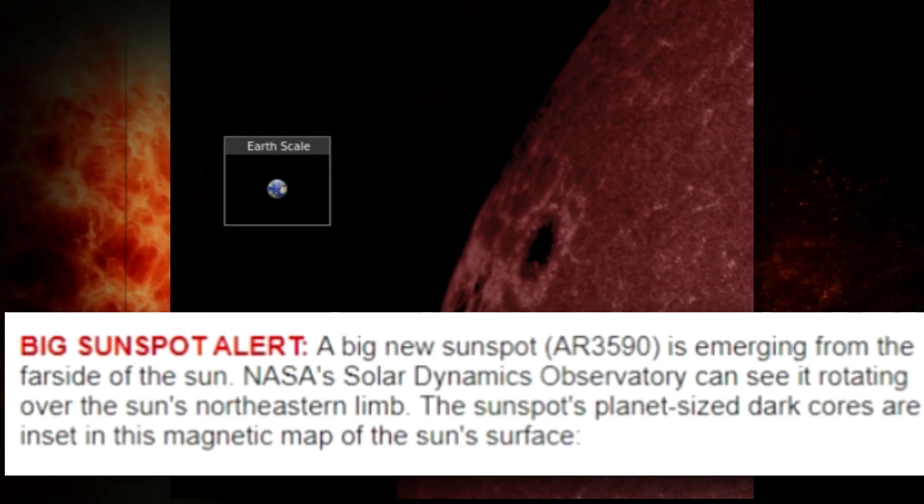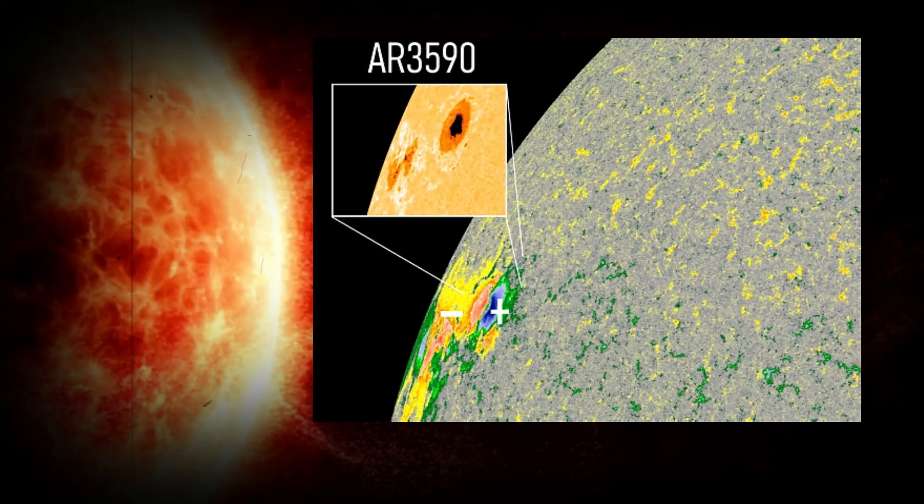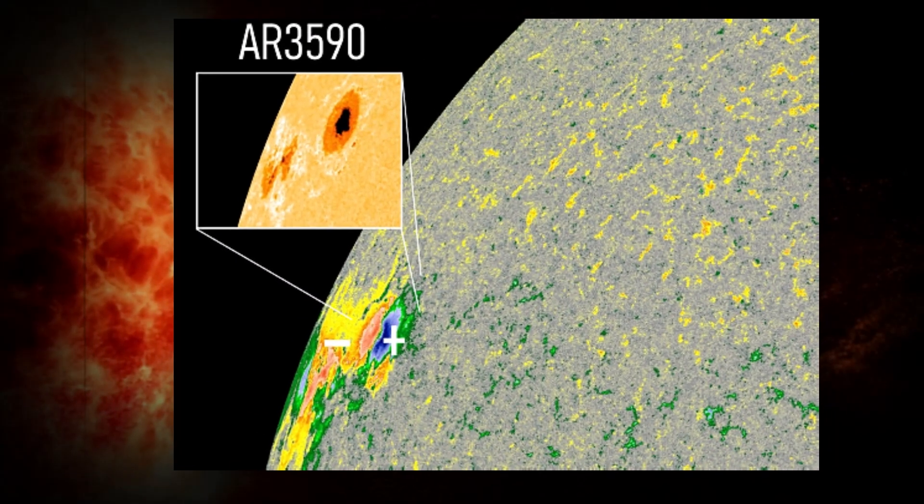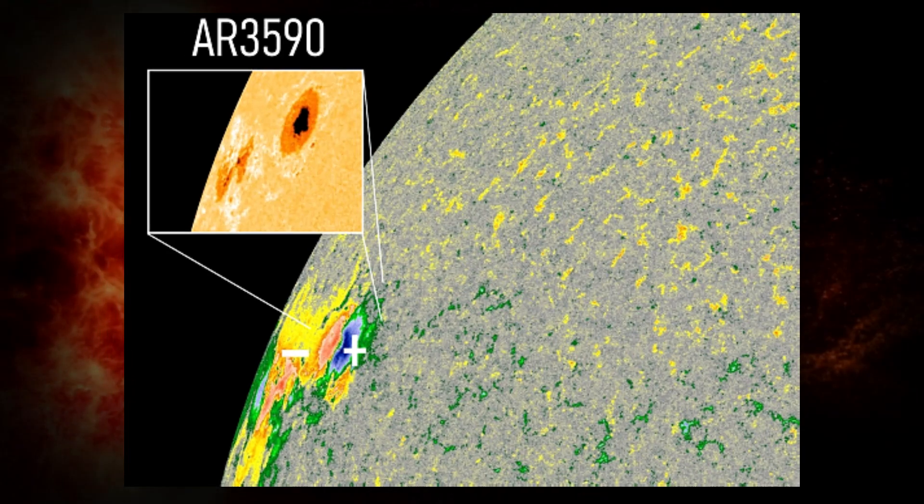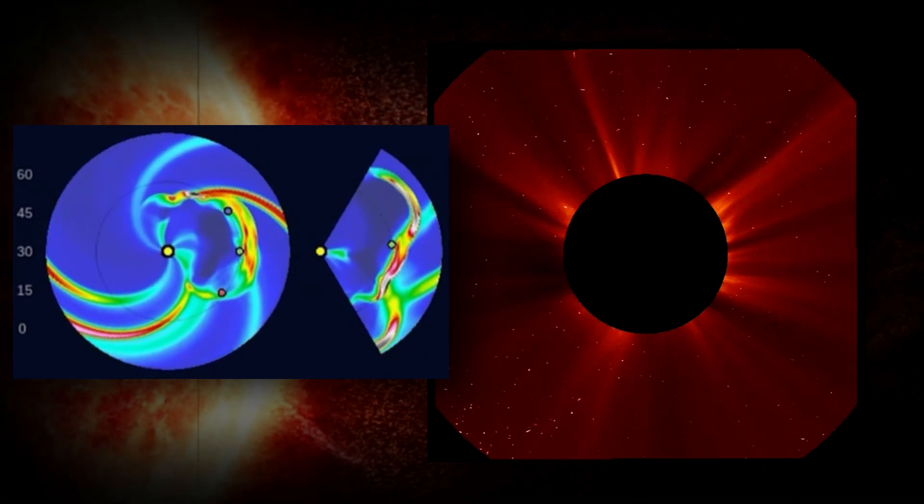The sunspot's planet-sized dark cores are inset in this magnetic map of the sun's surface. Finally, just a detailed look at these sunspots and how massive they are - it's just unbelievable how much energy these things can put out. The last thing we need is something like the Carrington Event, which I'm sure many of you know about.